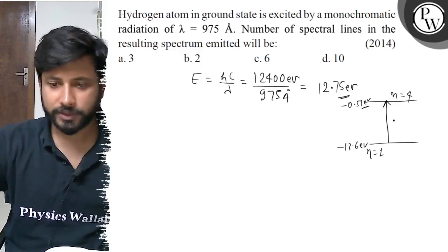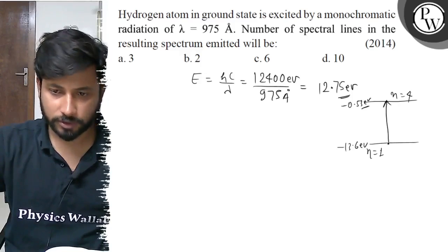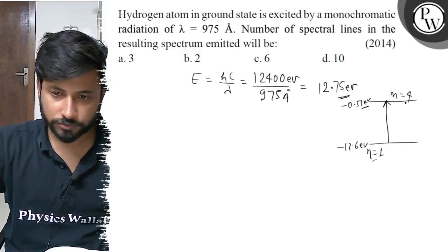The energy difference is 12.745 electron volts. So with this energy, the transition is from n equals to 1 to n equals to 4.